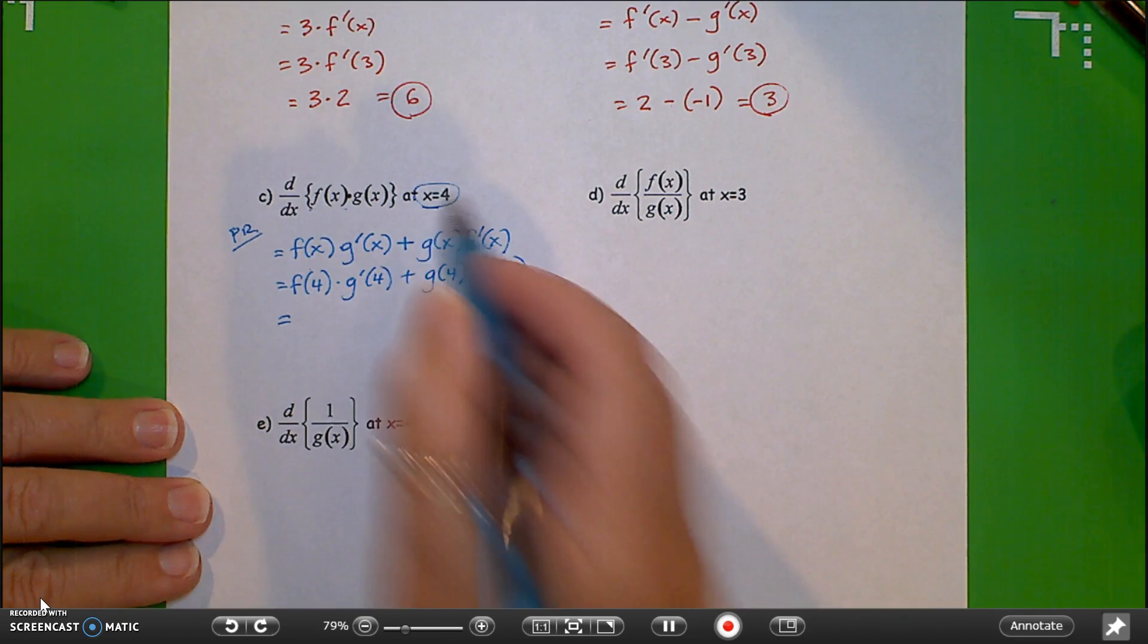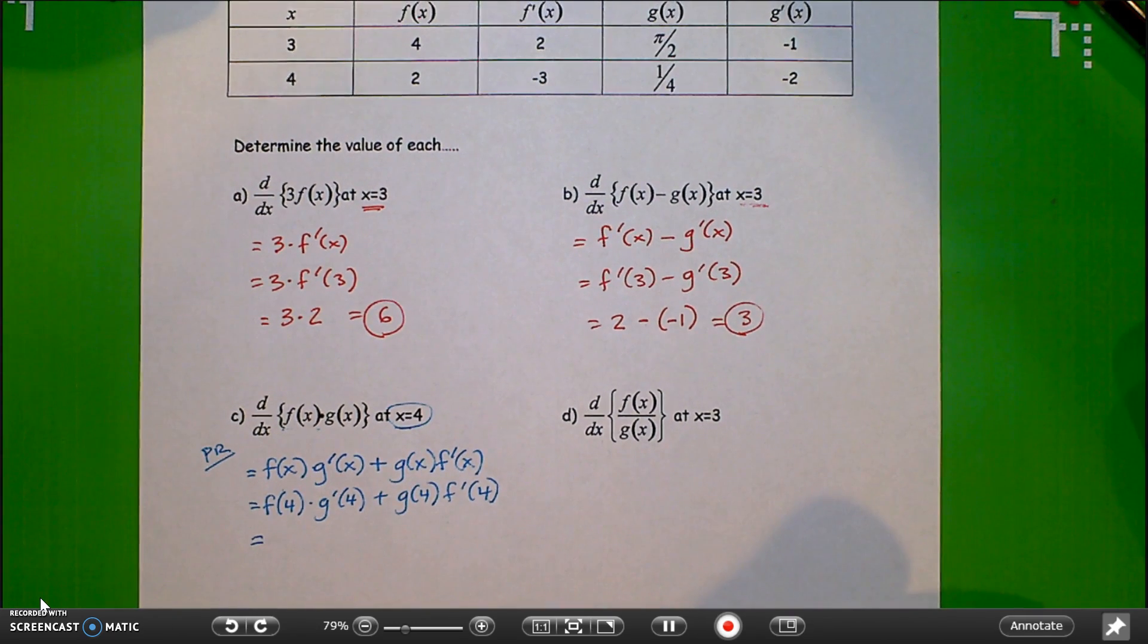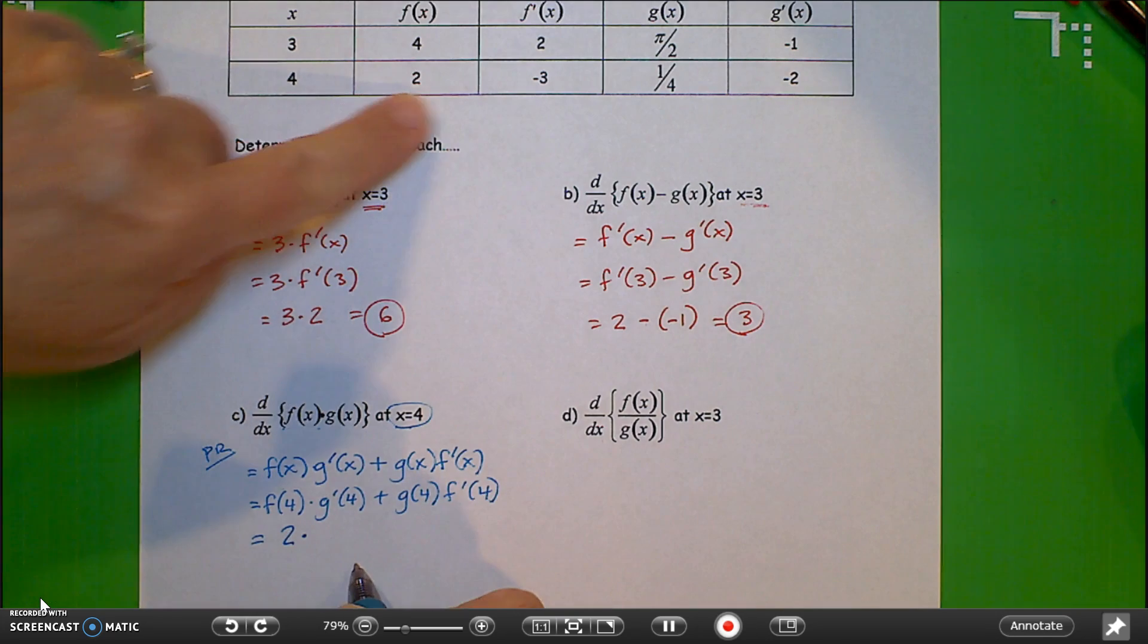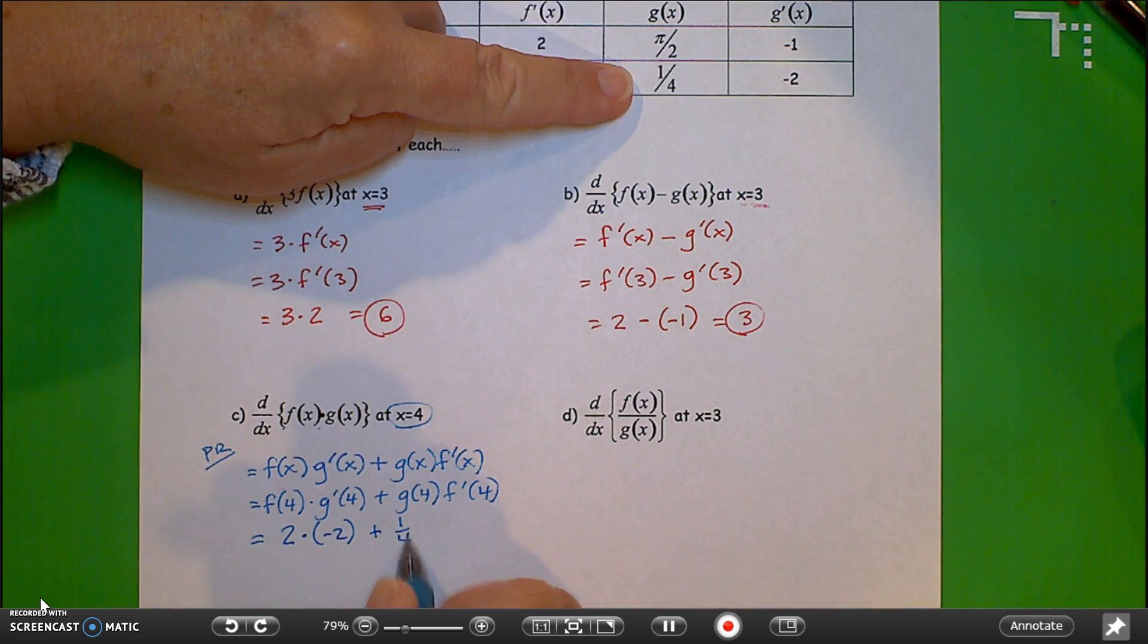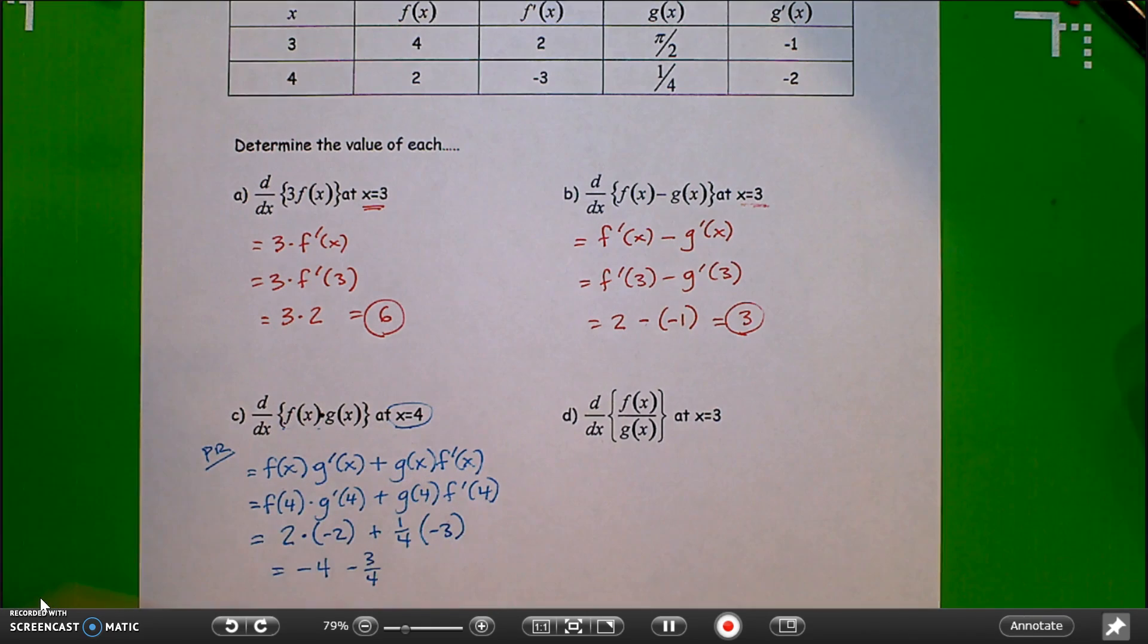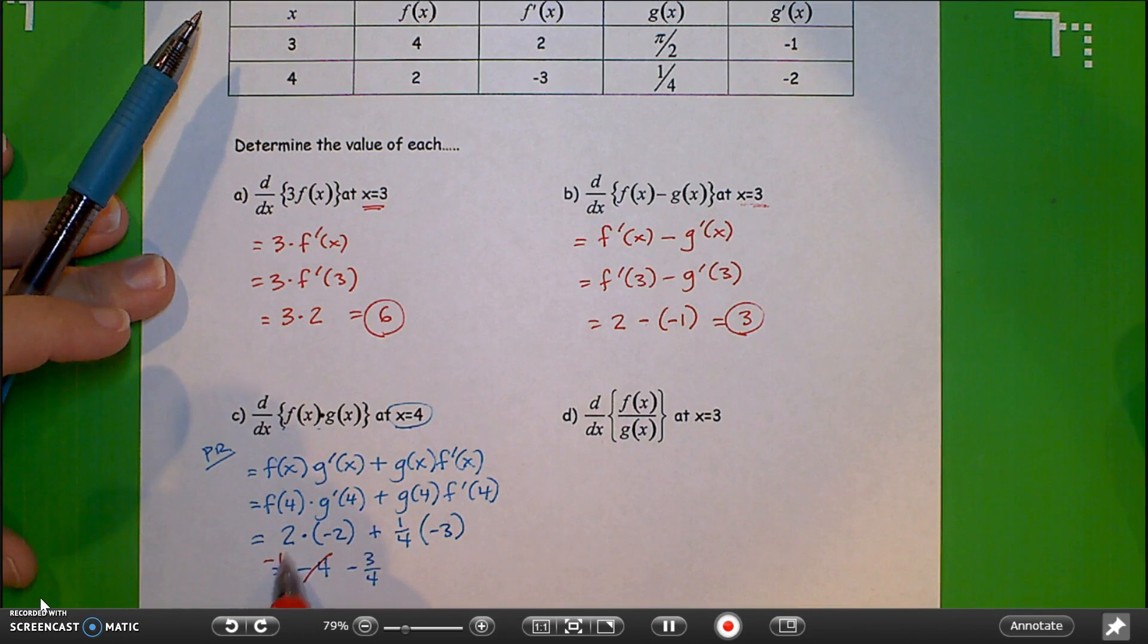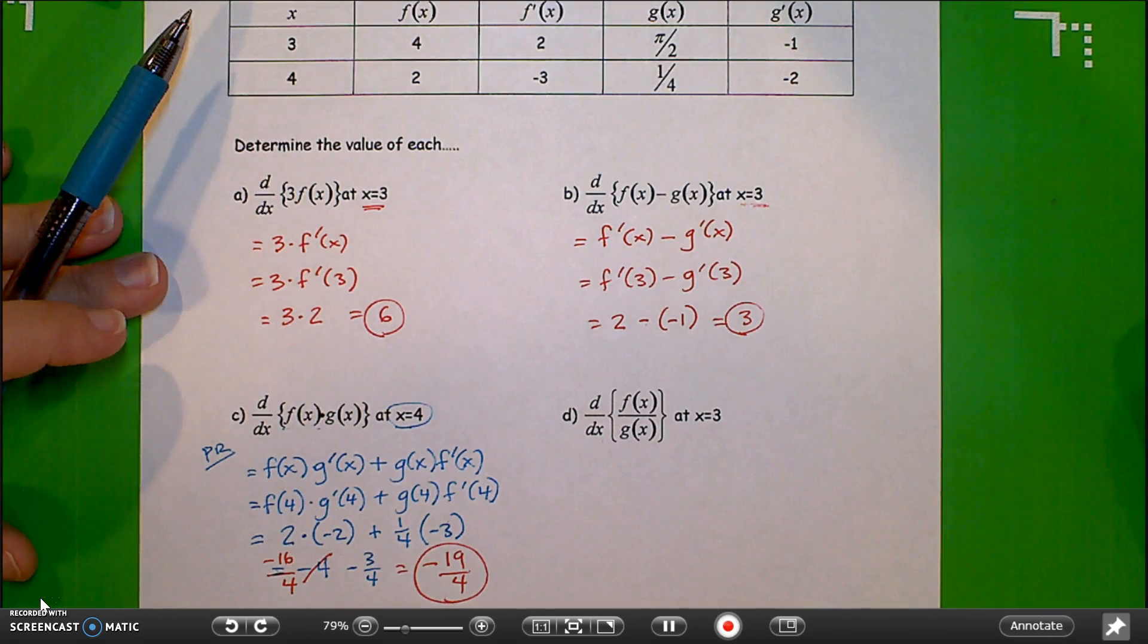And we're going to evaluate it at 4, so we have f of 4 times g prime at 4, plus g of 4 times f prime at 4. You could actually do your substitutions here even without writing that next line. Just be careful that you're going to the right place. This seems like a simple process, to go to the table and pick out the correct value, but it's amazing how easy it is also just to make a mistake. So let's see if I can do this. f of 4 is 2, g prime at 4 is negative 2, g of 4 is 1 fourth, f prime of 4 is negative 3. That's negative 4 minus 3 fourths, and usually for me the best way to do this is to revise this into a fraction with 4. So negative 4 is actually negative 16 fourths. So negative 16 fourths minus 3 fourths is negative 19 fourths.